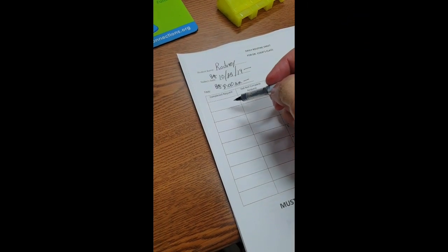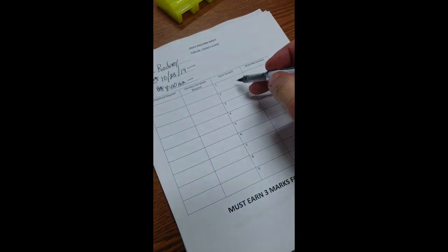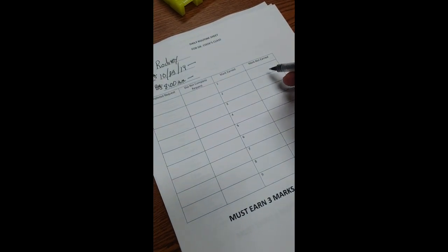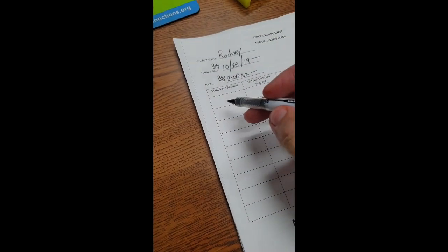If you look above in the video you can see how I mark the form for a student. You make a request of a student and if they complete that request within the parameters you set, then you put down that they earned a mark.